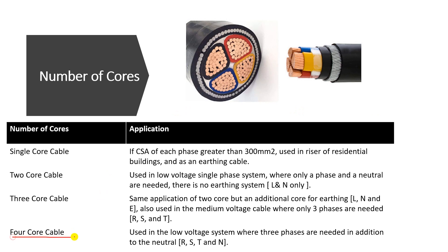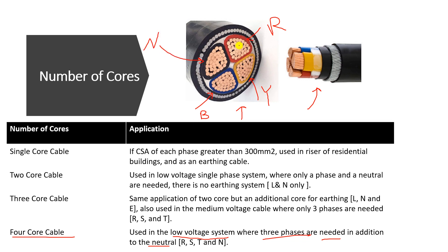The last type is the four core cable. It has three phases and a neutral, so it is used in low voltage systems where three phases and a neutral are needed — R, S, T, and N. You can see red, yellow, and blue for the three phases, and black for the neutral. At the end of the cable, you can separate each core individually to connect them to the bus bars. This is the three-phase and neutral four core cable.